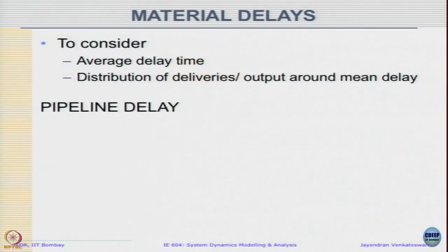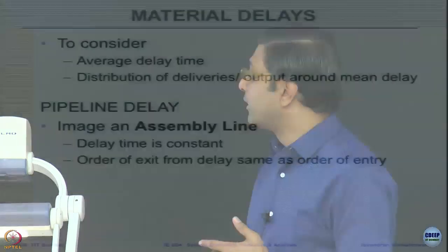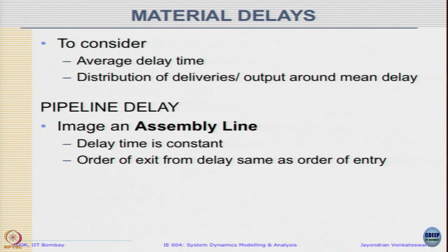Let us take the simplest case where output lags behind its input by a fixed and constant duration. We call that a pipeline delay — whatever you send in at one end of the pipe comes out at the other end, the same quantity after a fixed duration. This is very common in an assembly line setup where material is sent in and after a fixed time a finished product comes out. The order of exit from the delay is the same as the order of entry, and delay times are constant.